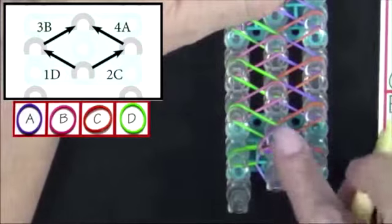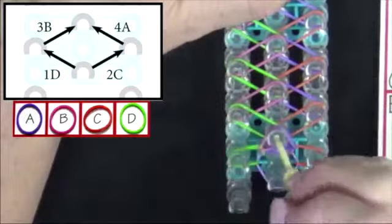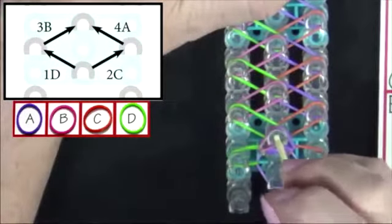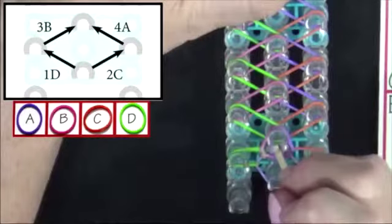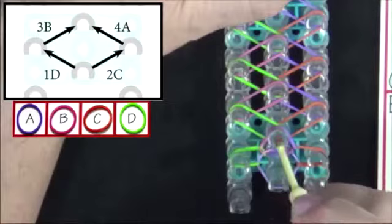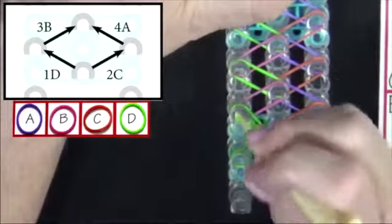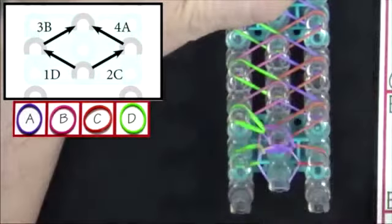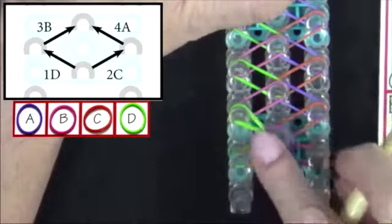We'll do that again. Band 1D, reach into the channel of the pin, put all the bands above that back. With your hook, you're going to grab the D band and pull it out to the left. Band 2C, you'll do the same thing.